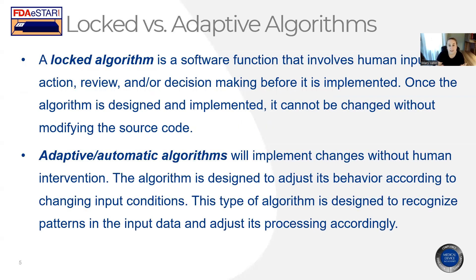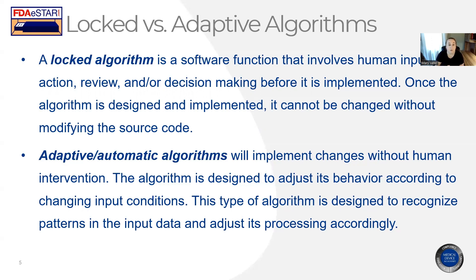PCCPs cover both locked and adaptive algorithms. A locked algorithm is a software function that involves human input, action review, or decision making before it is implemented — once the algorithm is designed, it cannot be changed unless you modify the source code. Whereas adaptive or automatic algorithms implement changes without human intervention; the code is written such that the algorithm adjusts its behavior according to changing input conditions and is designed to recognize patterns in the input data and adjust its processing accordingly. Both of these are covered within the scope of what can be proposed in a PCCP, and you would just need to specify exactly which it is in your detailed description.